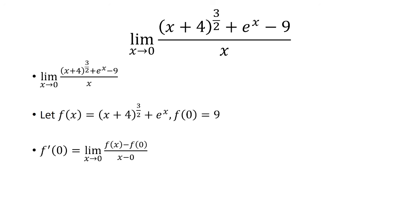So I can transform this into the limit definition at x equals 0. Right, because it's in this form. f of x is our function. f of 0 is 9. And then the denominator, we have x minus 0.